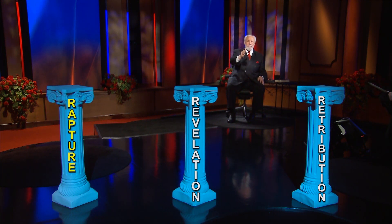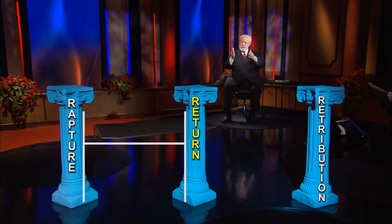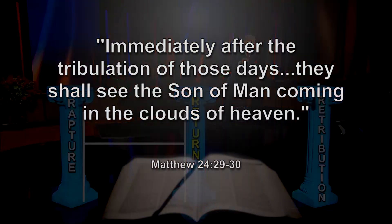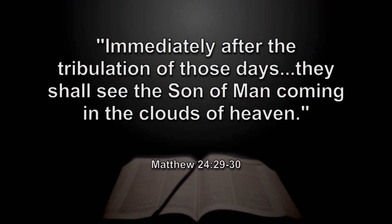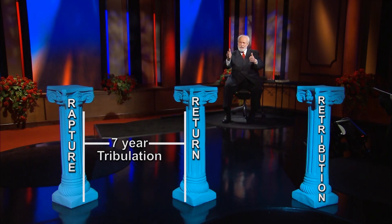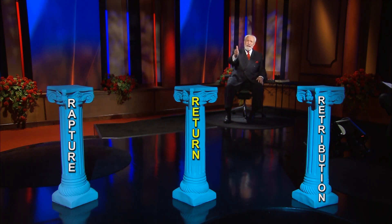The second pillar will be the revelation, or the return of Jesus Christ back to the earth. You'll notice there's a space in between the rapture and the return. Jesus Christ in Matthew 24, verse 29, said immediately after the tribulation, I will come back to the earth. So you see the rapture, and then there's a space — that would be the seven-year tribulation period. We get the name from Jesus Himself. And then He returns immediately after the tribulation period.